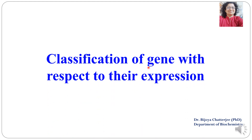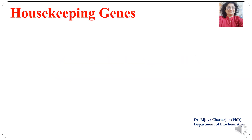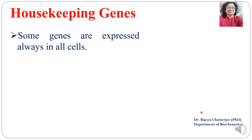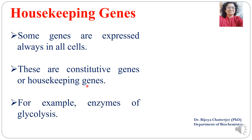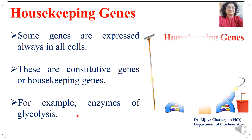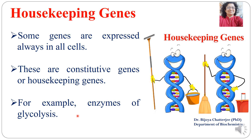Now we will look at the classification of genes with respect to their expression. With respect to gene expression, there are two types of genes. The first is housekeeping genes — some genes are expressed in cells always. These are known as constitutive or housekeeping genes. For example, enzymes of glycolysis are required all the time by any organism, so their genes are always expressed.